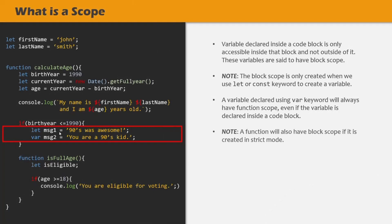A function will also have block scope if it is used in strict mode. When we use strict mode and create a function inside a code block — such as inside an if statement or a for loop — that function will also have block scope, but only if we are creating it in strict mode. In non-strict mode, even if we create a function inside a code block, it will have function scope.